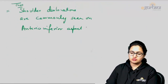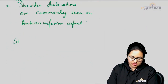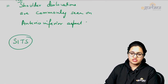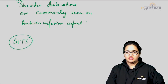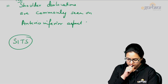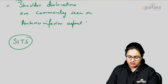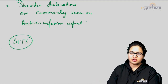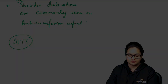Apart from this, you can mention that the SITS muscles are attached to the scapula on one side and come to the humerus on the other side. If you want to expand your answer, you can include the origin and insertions of these four muscles.